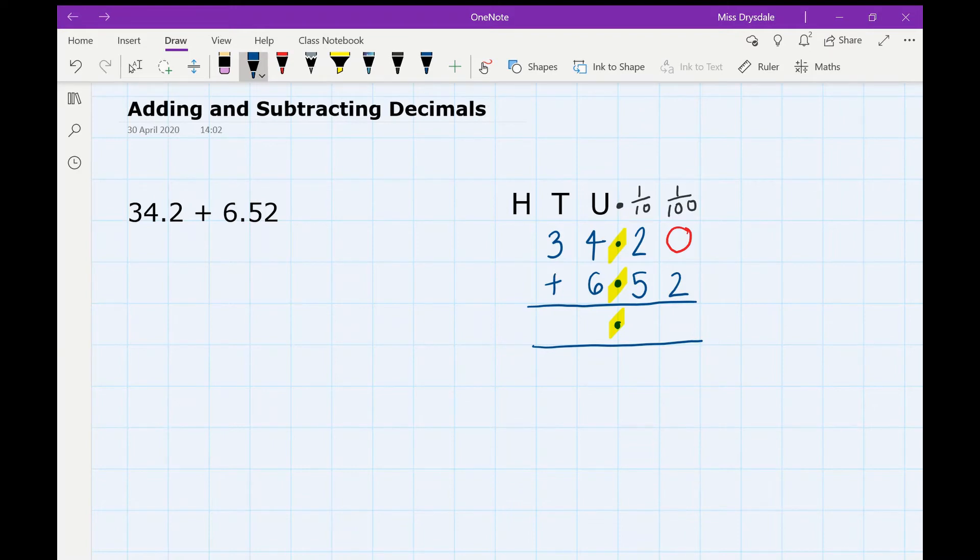Okay, so let's go ahead and add these. So 0 add 2, you just add them like you normally would with a whole number. Now because you've got your decimal point in there, 5 add 2 is 7, 6 add 4 is 10, put down your 0, carry 1, and then 3 add 1 gives you 4. So your answer is 40.72.